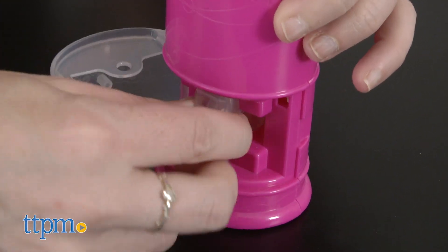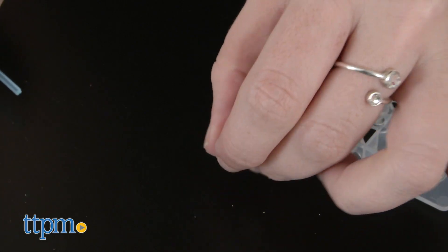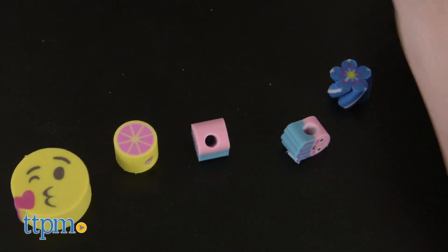Kids can also head over to CutieSticks.com for more DIY ideas. Additional Cutie Sticks supplies are available and sold separately. The Cutie Sticks jewelry maker is for ages 6 and up from Maya Toys.